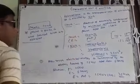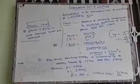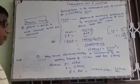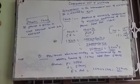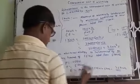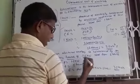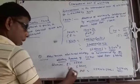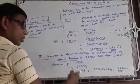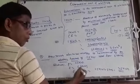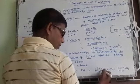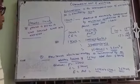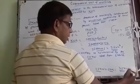On the basis of energy consumed by electrical appliances, we can solve numerical questions. Here is a problem based on energy consumption: how much electric energy is consumed by an electric heater of 1.5 kilowatt used for 5 hours? P equals 1.5 kilowatt, T equals 5 hours. Energy consumed equals P into T, that is 1.5 kilowatt into 5 hours, which gives 7.5 kilowatt hours. This means 7.5 units of electricity is consumed.